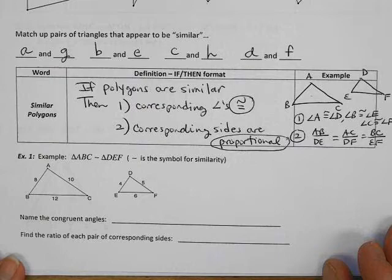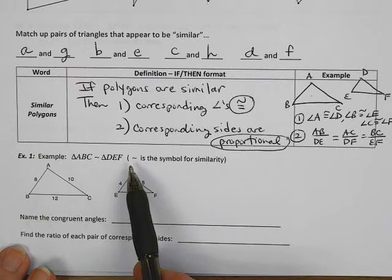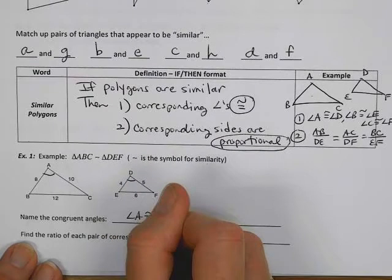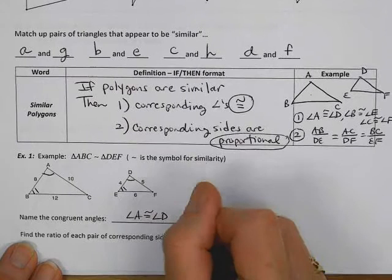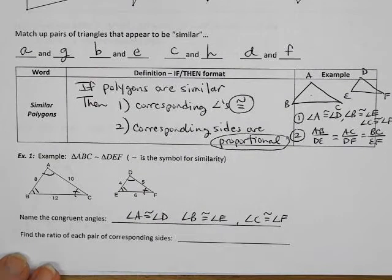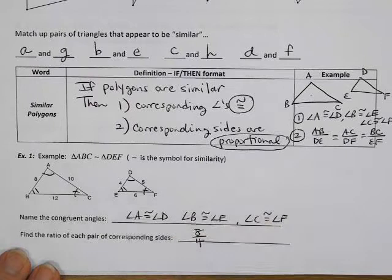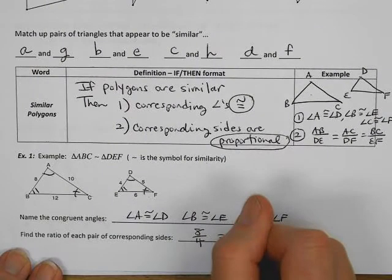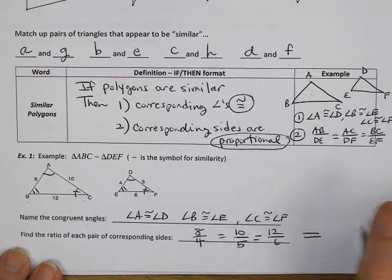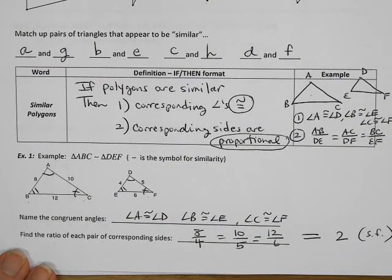So let's try down here. We have an example. Notice this is the symbol here for similarity. It's like the congruent squiggle without the equal sign underneath it. That just means similar. So these two triangles are similar. Name the congruent angles. So A would go with angle D, B would go with angle E, and C would go with angle F, because corresponding angles are congruent. Find the ratio of each pair of corresponding sides. Well, we know AB would go with DE, so that would be 8 fourths. AC would go with DF, that would be 10 fifths, and BC would go with EF, that would be 12 sixths. We can see that those all equal 2, which of course would be my scale factor. That's the ratio of the sides.